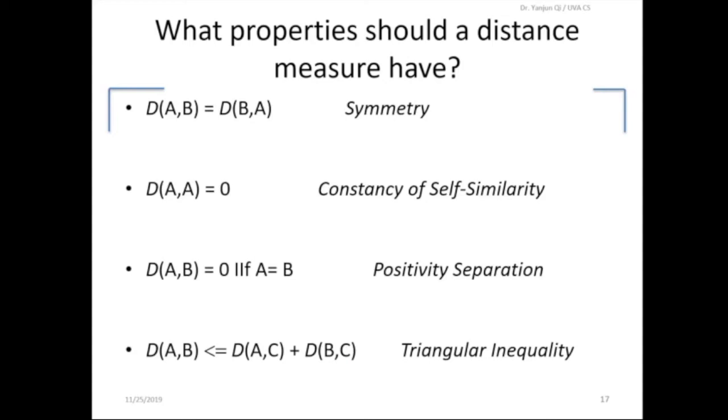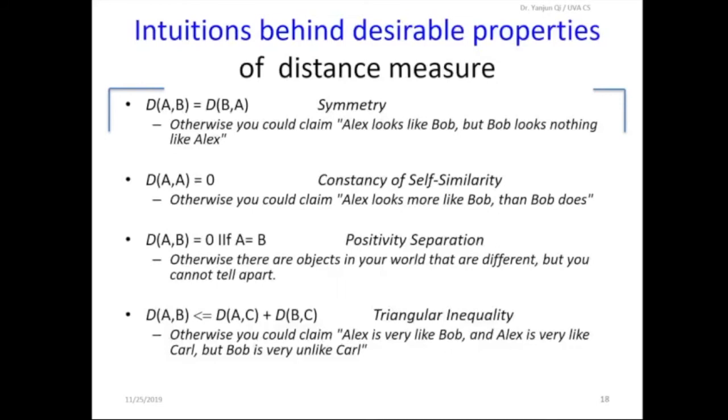So now, because we don't assume anything. We assume features are equally important in the vector space. Then we just use a normally defined distance matrix to measure the similarity among points, among samples. So what makes a good distance measure good? Normally we want to look for four properties: the property of symmetry, property of self-similarity, property of positive separation, and the property of triangular inequality. So let's see why we care about that.